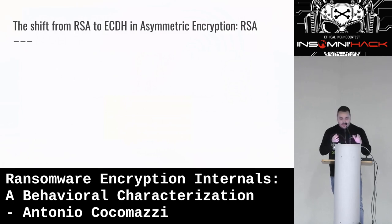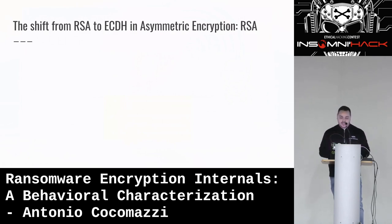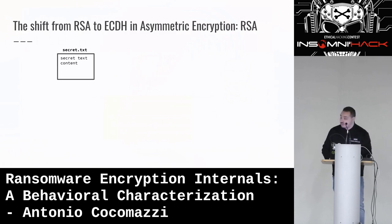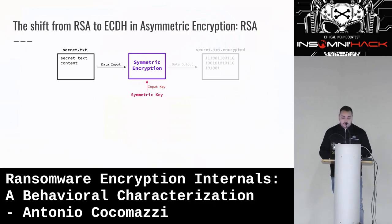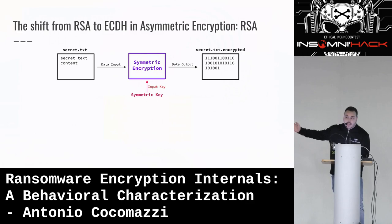Now I'm going to show the difference between RSA and Elliptic Curve Diffie-Hellman — I'm not a mathematician, so no formulas. Whenever a ransomware implementing RSA wants to encrypt a file like secret.txt, it performs symmetric encryption because symmetric encryption is very fast compared to asymmetric. They feed the file content and a symmetric key as input, and the output is the encrypted buffer placed inside the encrypted file. The problem is how the ransomware operator protects the symmetric key — that's where asymmetric encryption comes into play.